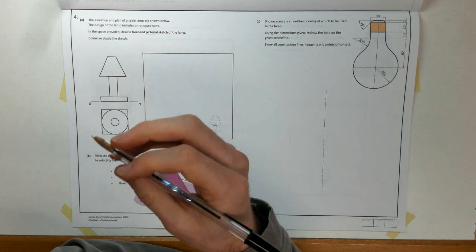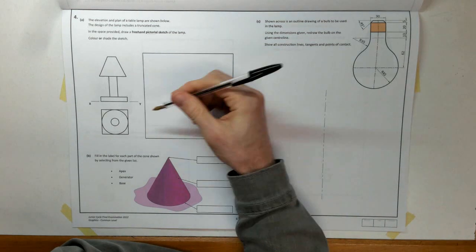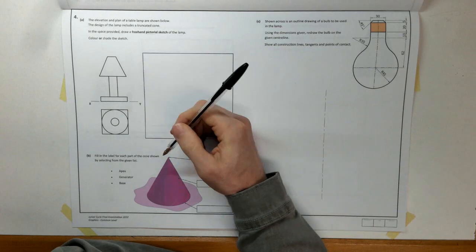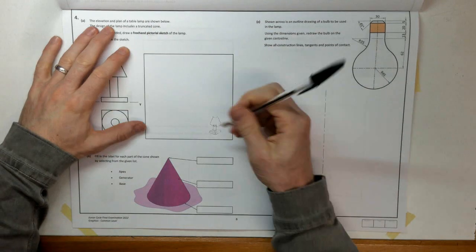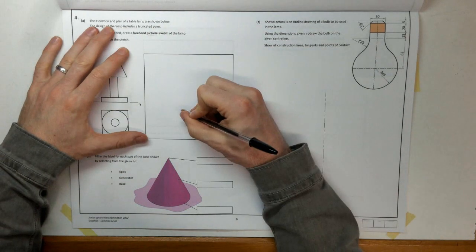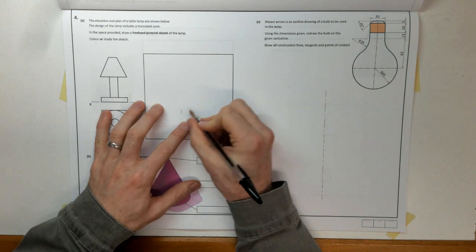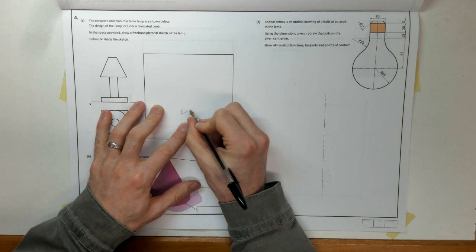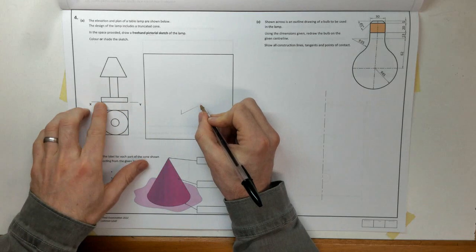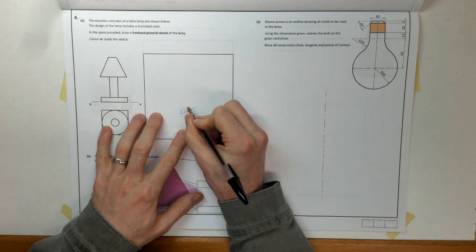So that's just a very rough sketch. What I want to do is draw a properly proportioned sketch of this. So we'll start off with our base. I'm going to draw this isometric. If you want to draw an oblique you can, but isometric tends to be nicer.